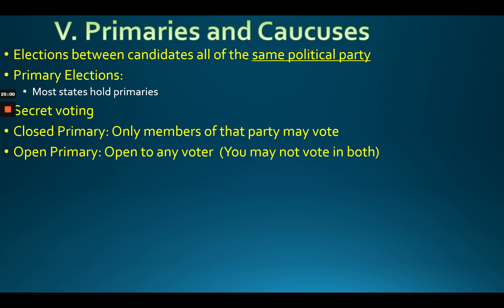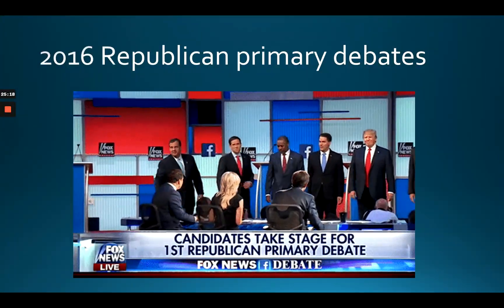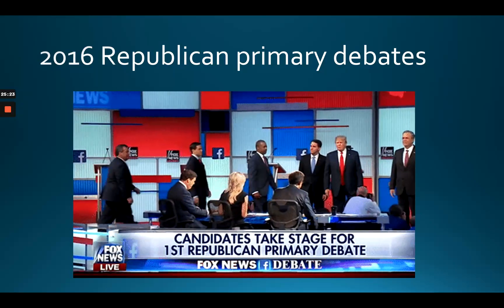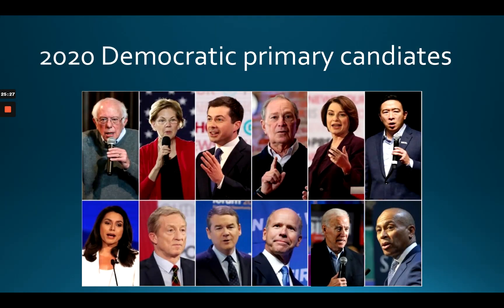Democrats have talked about going to Republican primaries and voting for Trump because they think they can beat him — and that's possible in open primary states but not in closed primary states. In 2016, look at all those Republicans running for presidency; in 2020, many Democrats ran, with Biden ultimately winning the primary.